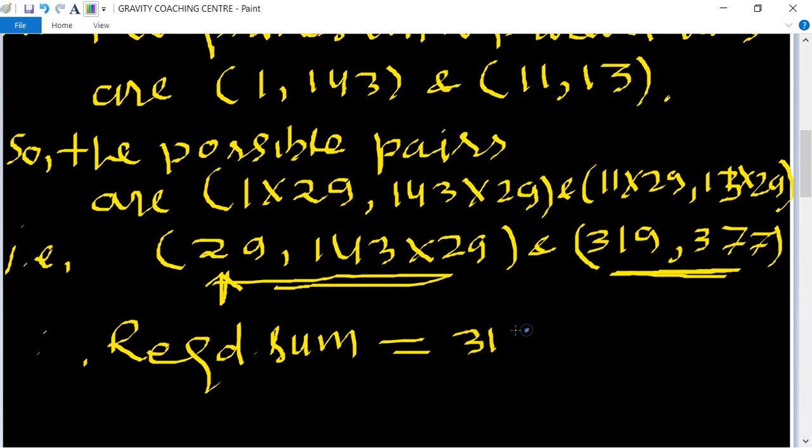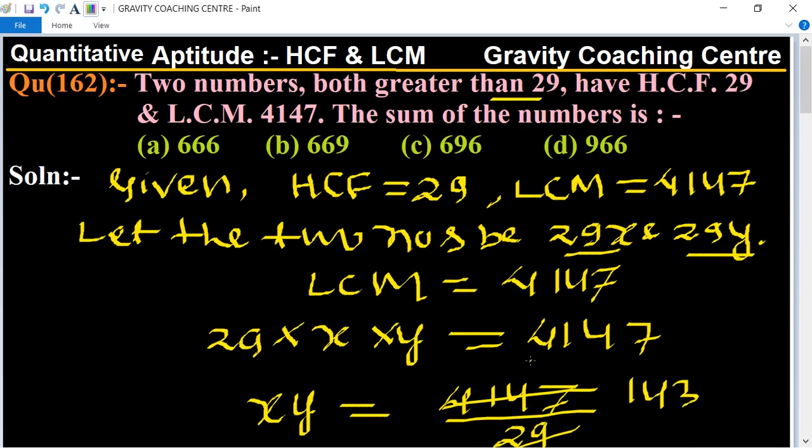319 plus 377 equal to 696, which is the required answer. So option C, 696, is the correct answer.